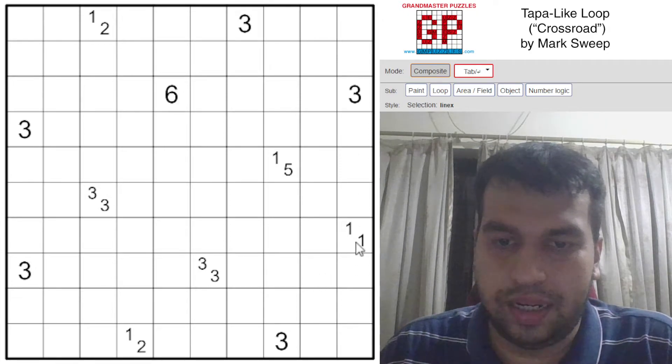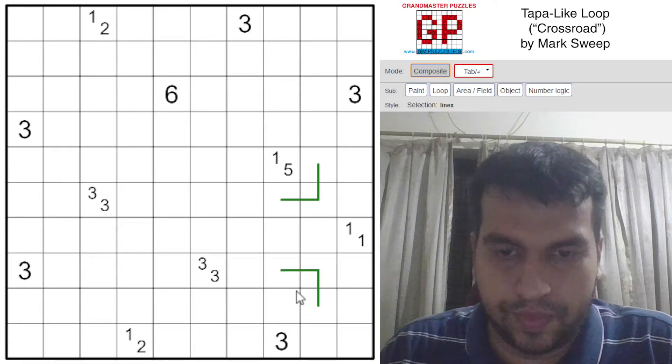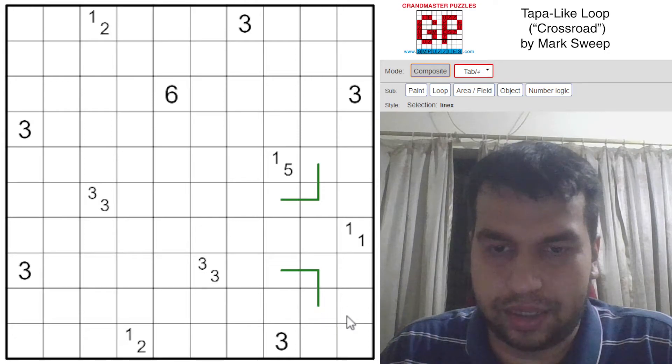The first clue I see is the 1-1. It's on the edge, that means the only place where the two ones can come is these. So now this bottom right segment is stranded, unless I take it out like this.